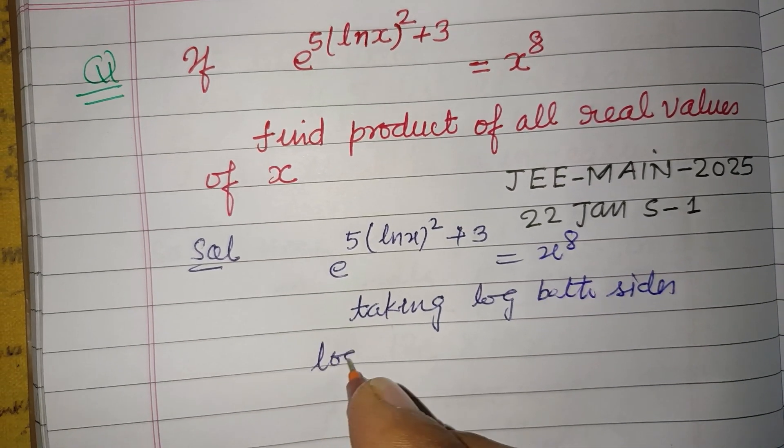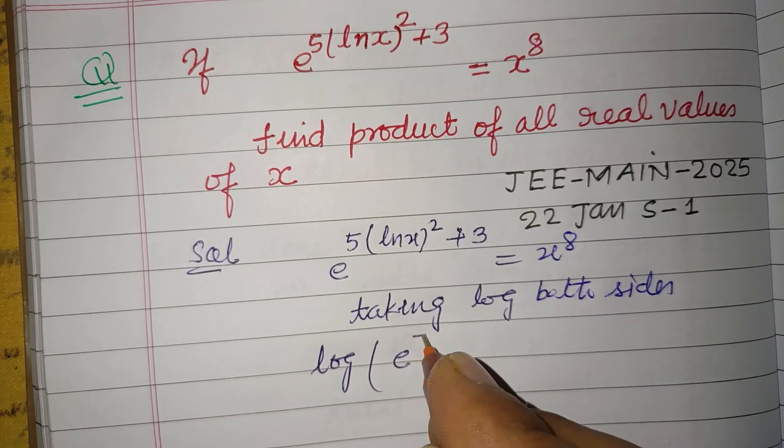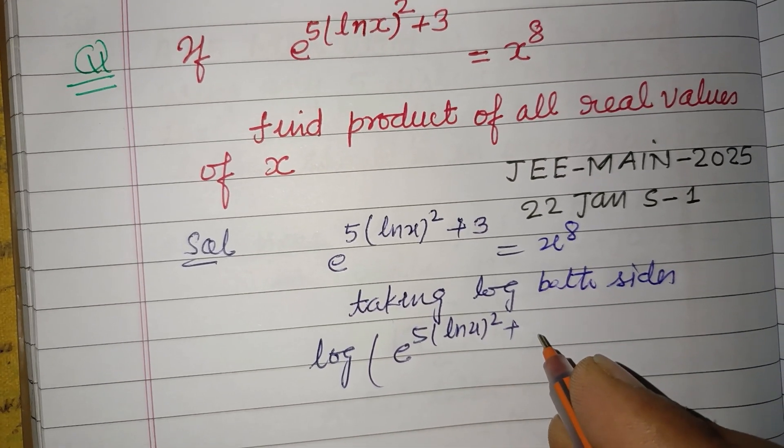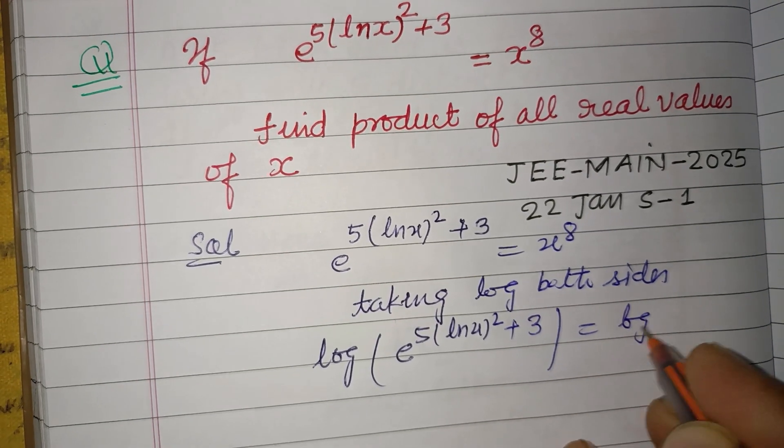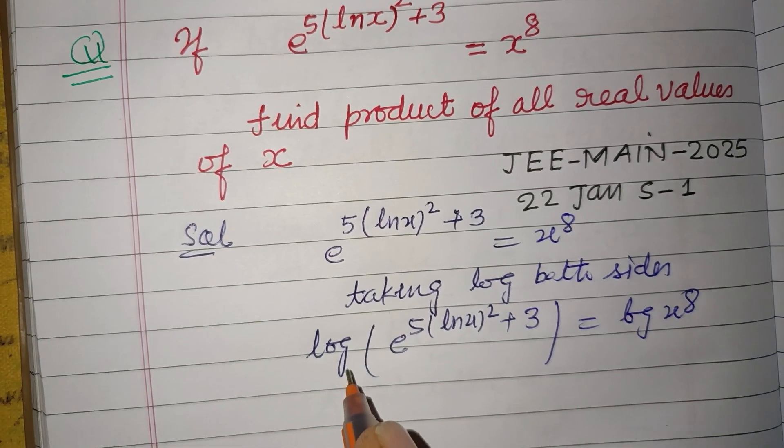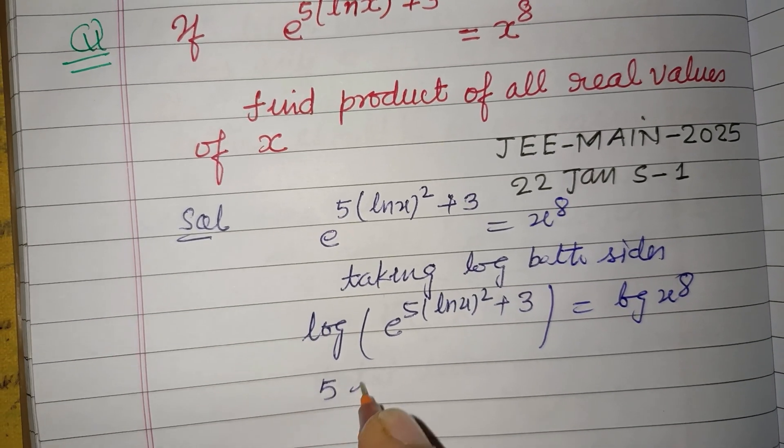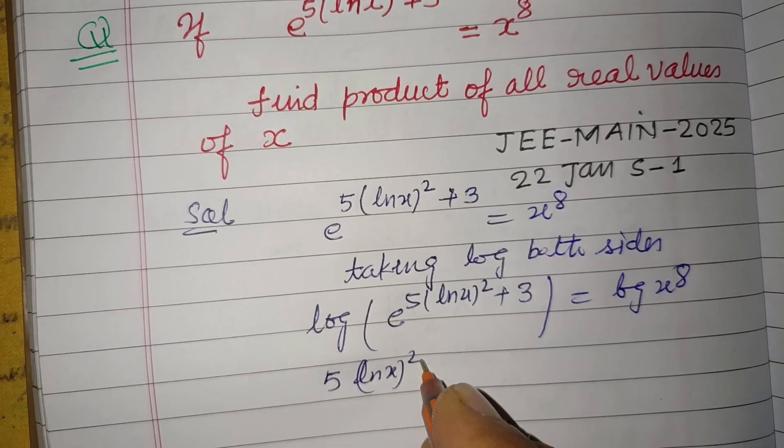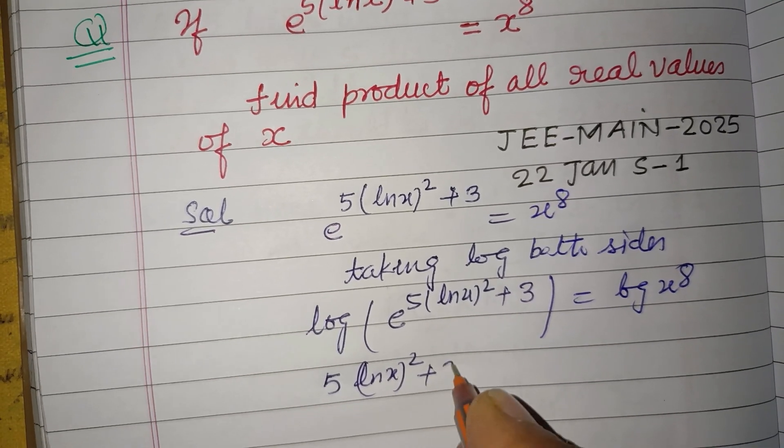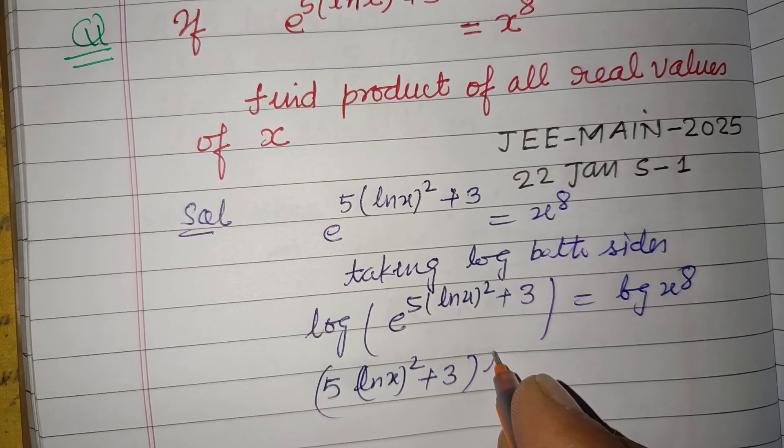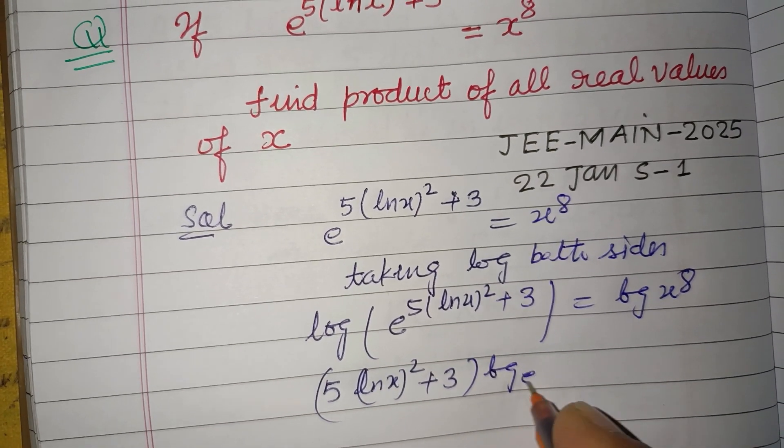So log of e to the power 5 times ln x whole squared plus 3, that is log x to the power 8. Using the log concept, this will be 5 ln x squared plus 3 into log e base e.